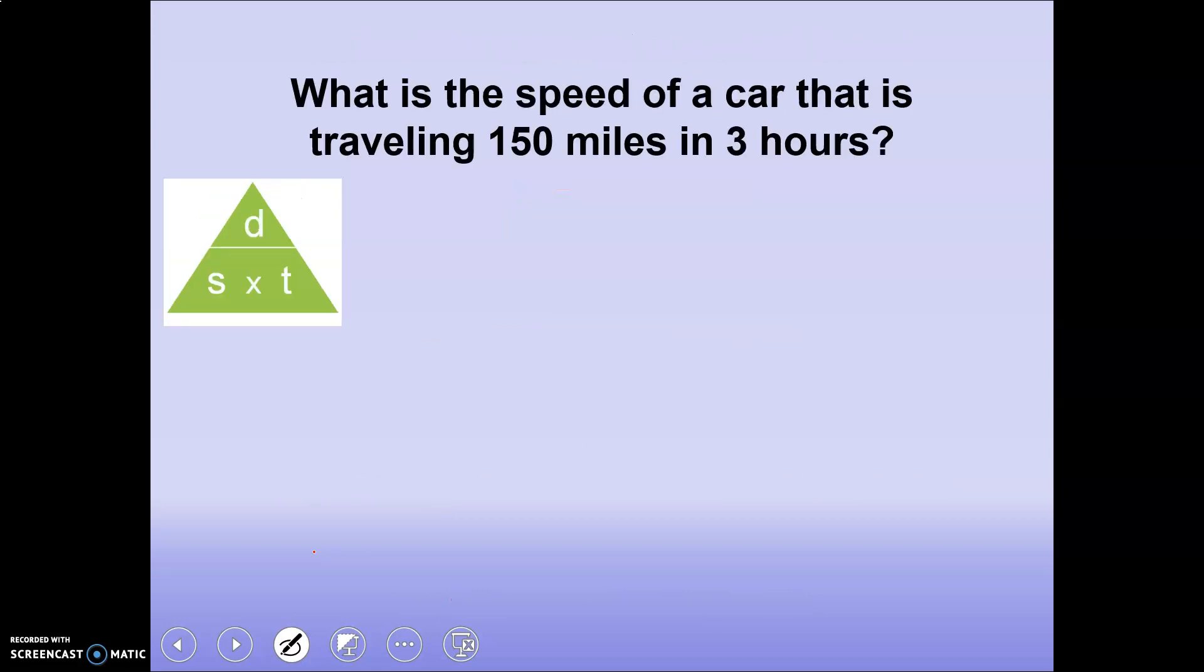All right, next one. What is the speed of a car that is traveling 150 miles in three hours? So again, we're solving for speed. So speed is going to be equal to distance divided by time. We know that the distance that the car moved was 150 miles and we know the time that it took was three hours. So we need to plug in speed equals distance, which was 150 miles, divided by time, which was three hours.